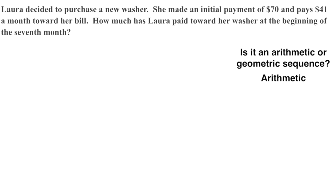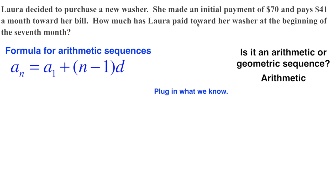Now that we know that, we can bring in our formula for arithmetic sequences. This is the original formula. What we need to do now is determine what we know and start plugging that in. We know A₁—A₁ is always the first term in the sequence. In this case, her initial payment was $70. So that was our first term.